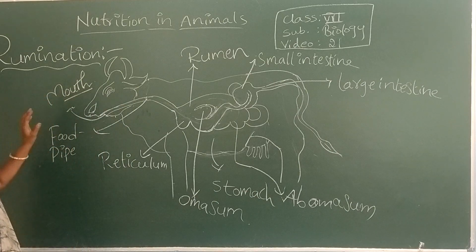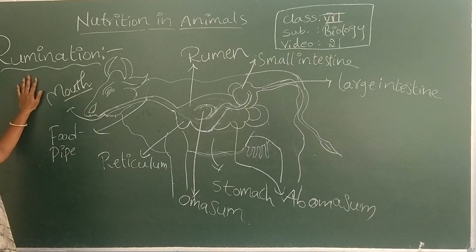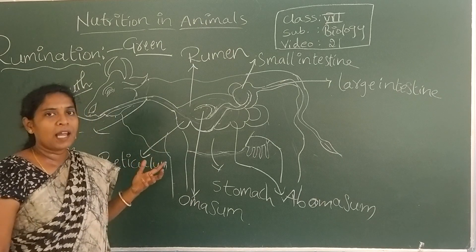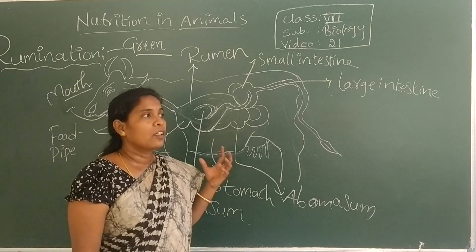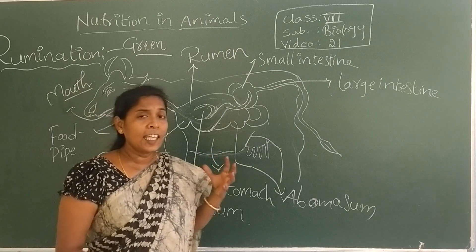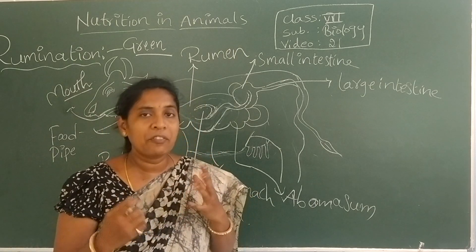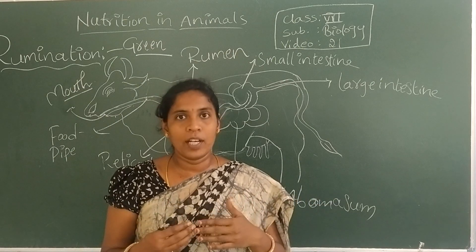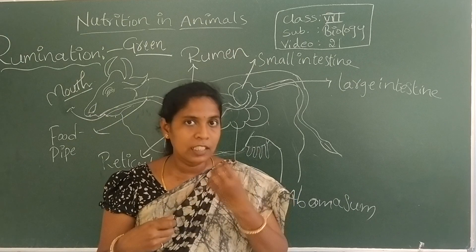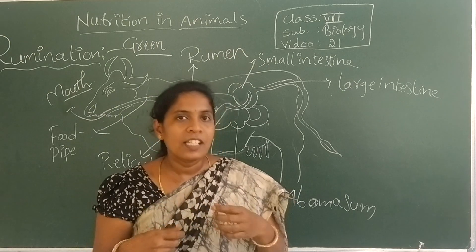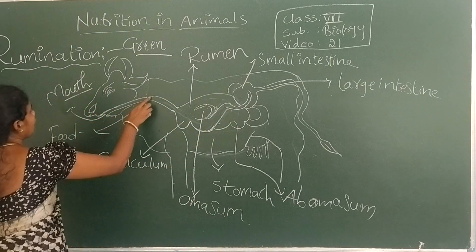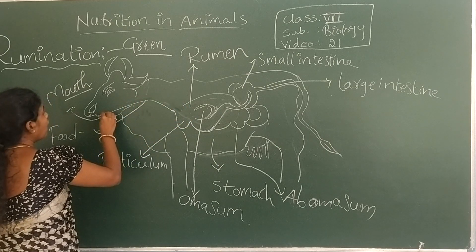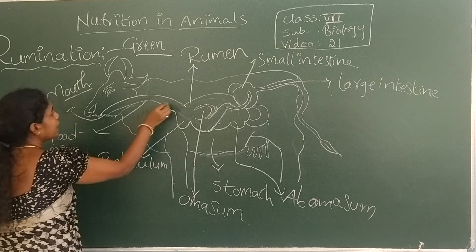Ruminants eat green plants, grass, leaves — anything that is green in color. When they eat, they eat very quickly without chewing thoroughly, because they don't want to wait and risk another animal taking the food. They immediately grab the food fast without chewing. I will draw the food pipe broader so you can easily understand how food is taken quickly.